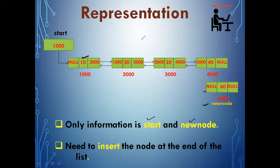Whenever we need to insert a new node at the end, we first need to reach the end of the list before establishing any connection. So we assign the value of start to temp. The last node's specialty is that its next part is null, so we keep moving temp to the next node until we find a node whose next is null.